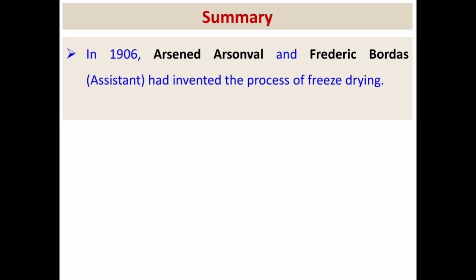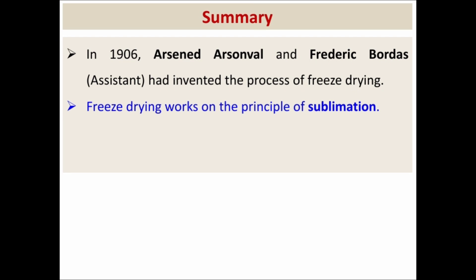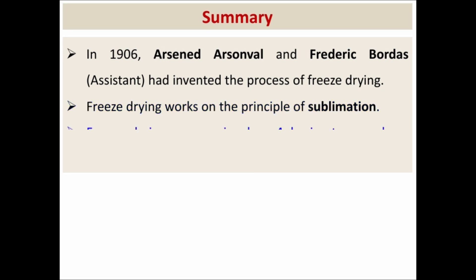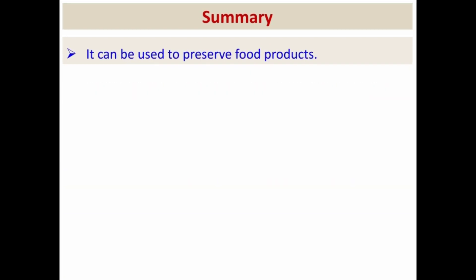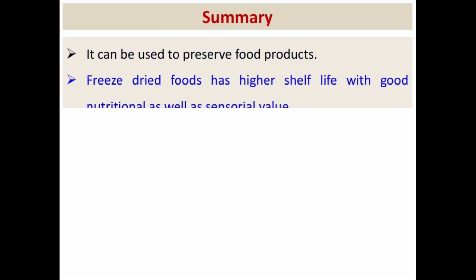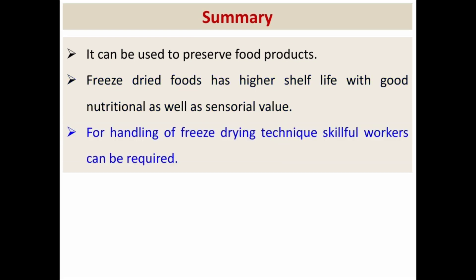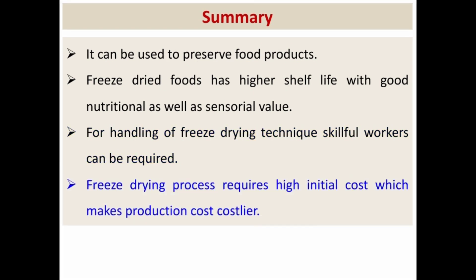To summarize: in 1906, Arsene d'Arsonval and Frederick Bordas invented the process of freeze drying. Freeze drying works on the principle of sublimation. The process involves four basic steps: pre-treatment, freezing, primary drying, and secondary drying. Freeze drying can be used to preserve food products, and freeze dried foods have a higher shelf life with good nutritional as well as sensorial value. However, skillful workers are required for handling, and the high initial cost makes production costlier.